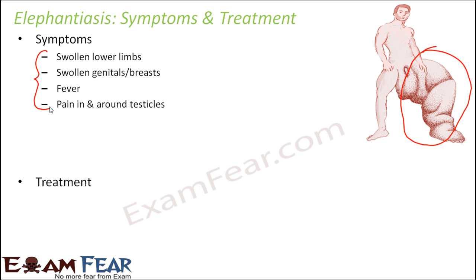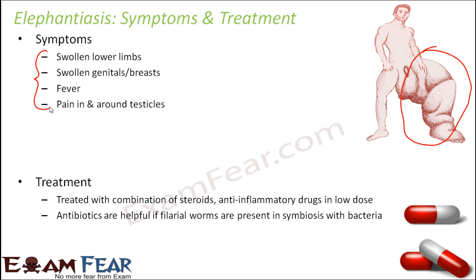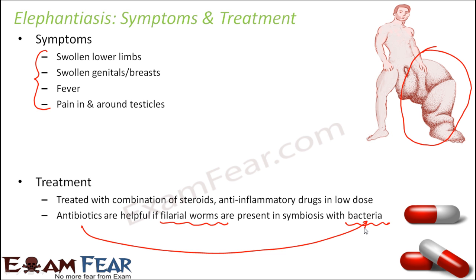Elephantiasis can be treated with a combination of steroids and anti-inflammatory drugs, but these must be given in low doses — treatment proceeds only gradually, not with a sudden high dose. Antibiotics are also helpful when filarial worms are present in symbiosis with bacteria, as some filarial worms share a symbiotic relationship with bacteria. Antibiotics help eliminate the bacterial infection, while anti-inflammatory drugs and steroids address the filarial worms.